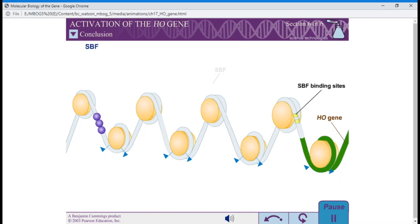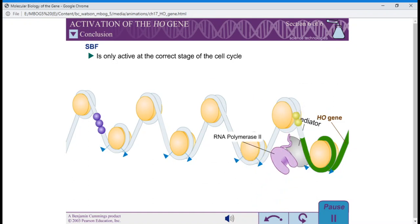SBF is only active at the correct stage of the cell cycle. Once its sites have been revealed through the action of SWIFI-5, SBF binds and directly recruits the mediator activating expression of the HO gene.